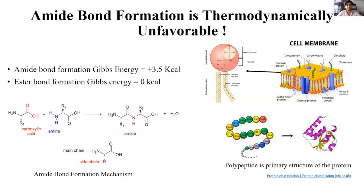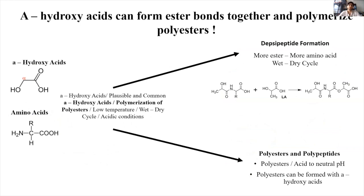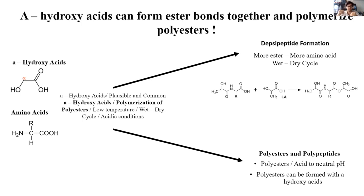Alpha hydroxy acids can form ester bonds and polymerize into polyesters. As you can see, alpha hydroxy acids and amino acids have similar structures — they are plausible prebiotic molecules found together in meteorite samples and prebiotic settings. Alpha hydroxy acids can polymerize into polyesters at low temperatures through wet-dry cycles under acidic conditions, which we can regard as a prebiotic setting.